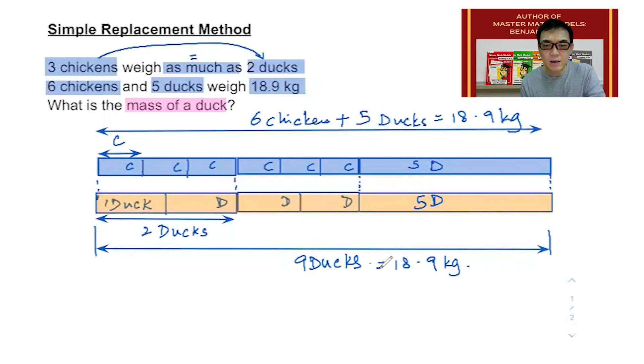With this, we will be able to find the mass of 1 duck. If 9 ducks is 18.9 kilograms, then 1 duck would be 18.9 divided by 9, and that should give me 2.1 kilograms.